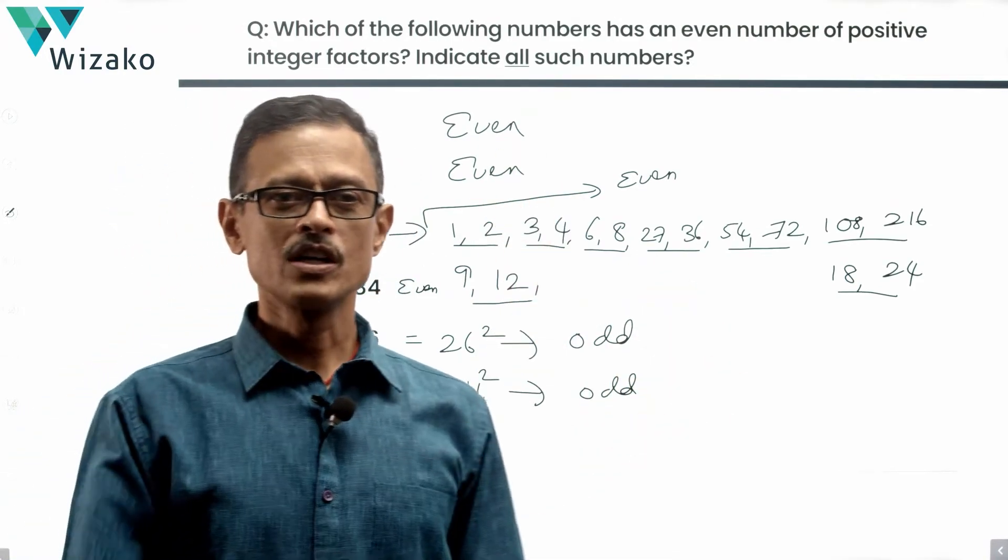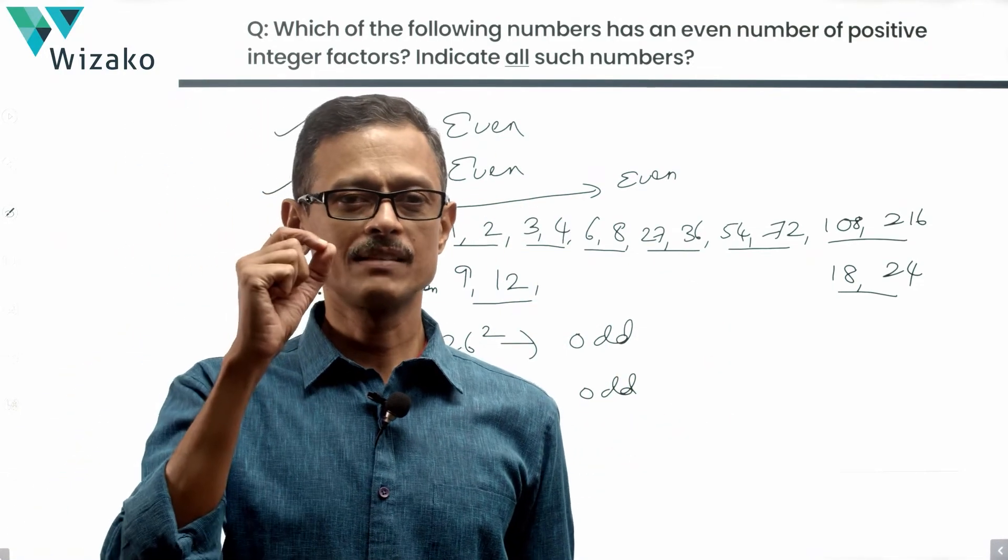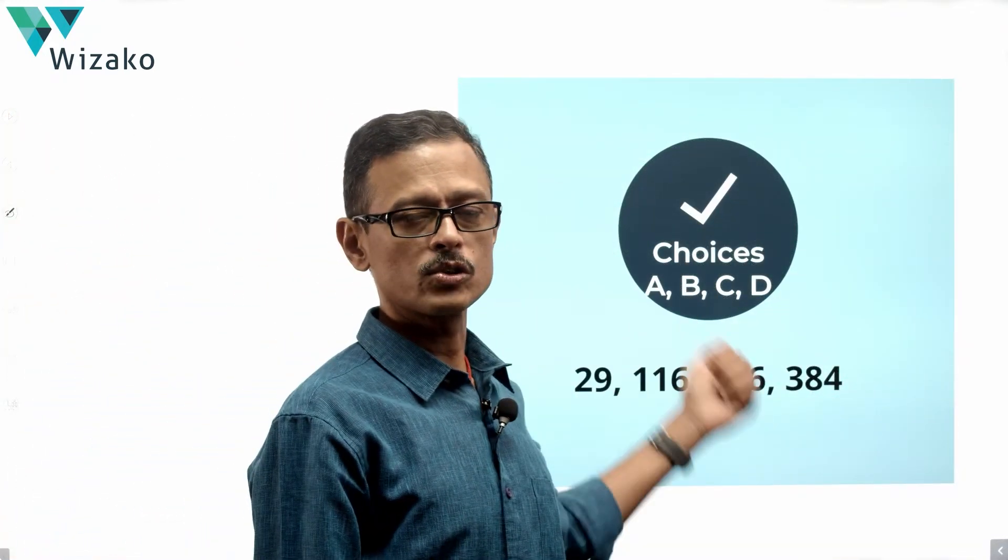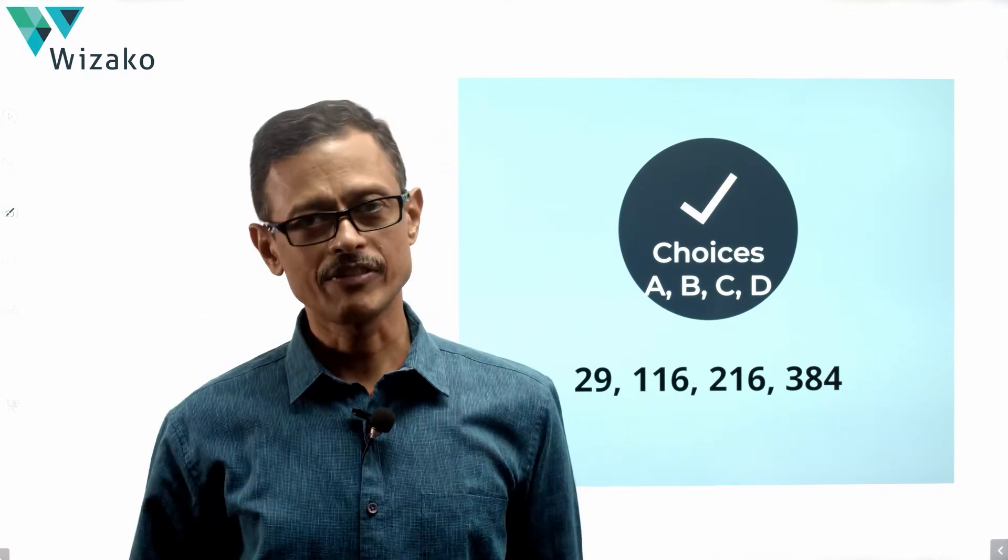So among the six answer options, four of them match. Four of these numbers are not perfect squares. So ABCD will be our answer options: 29, 116, 216, and 384 will have an even number of factors.